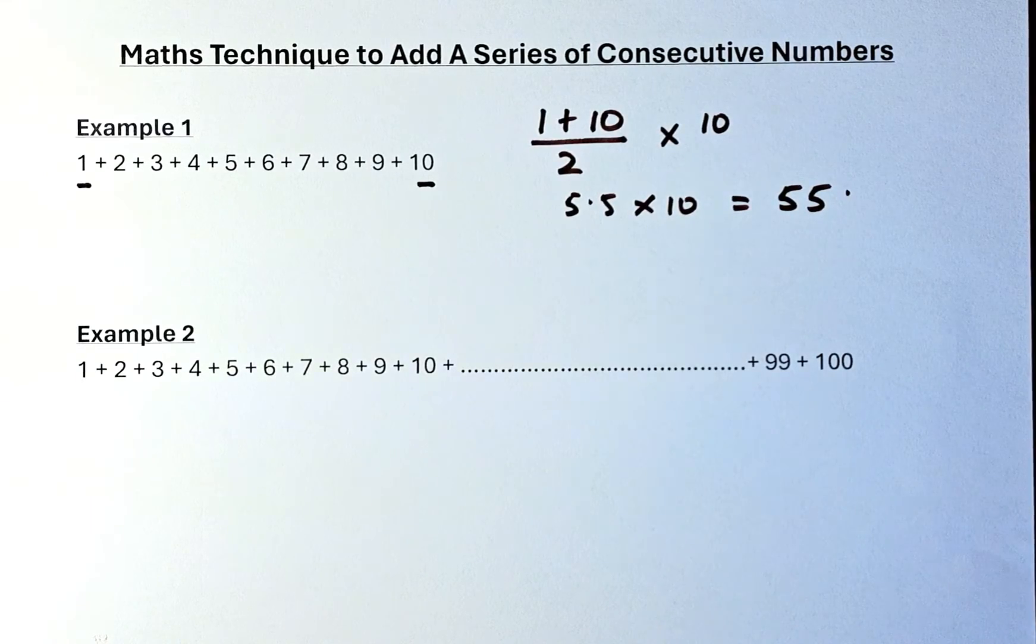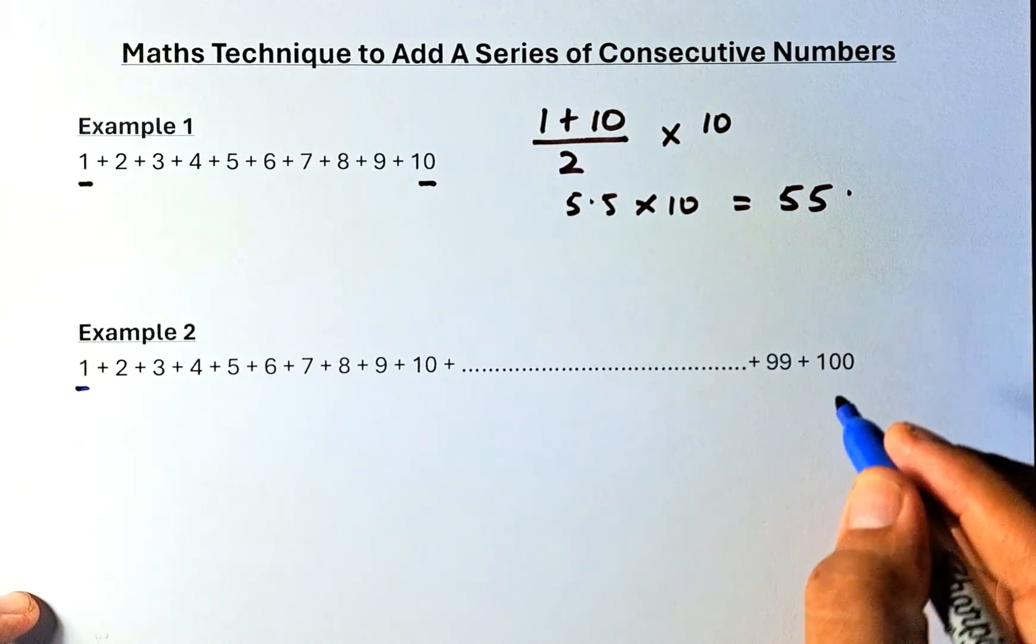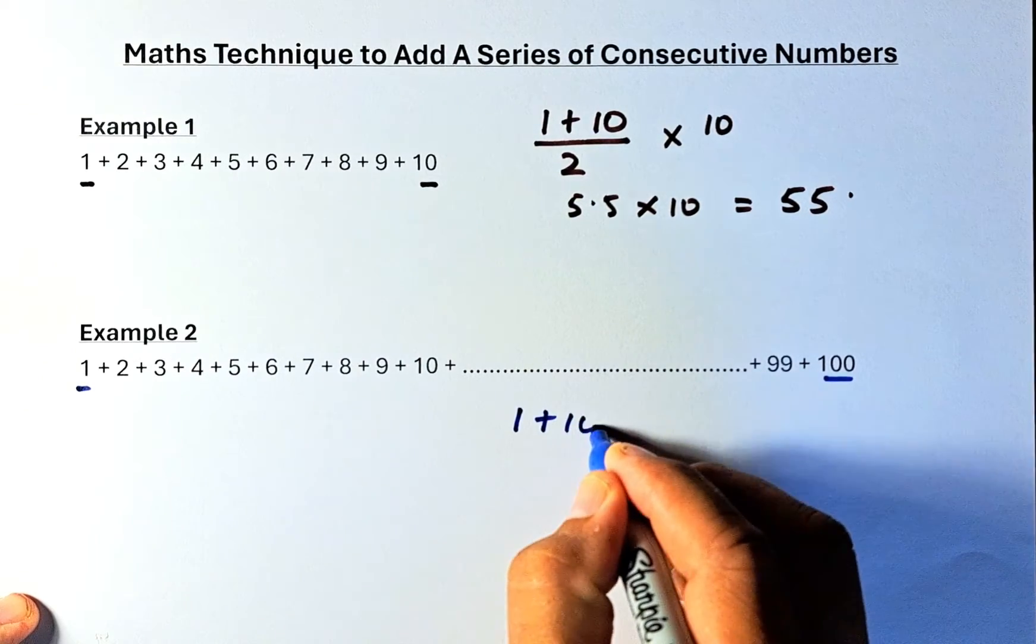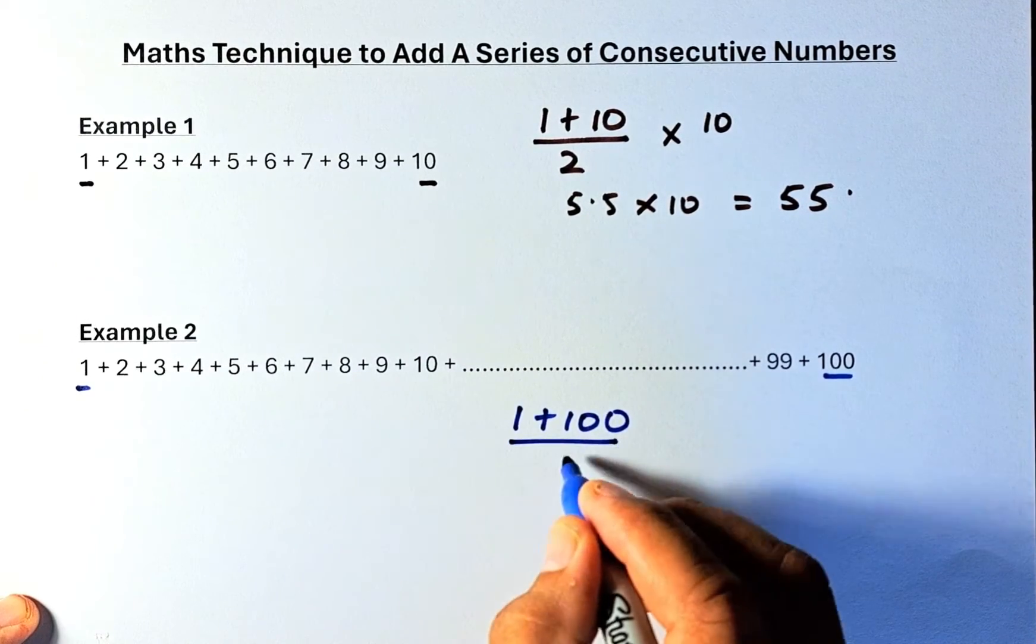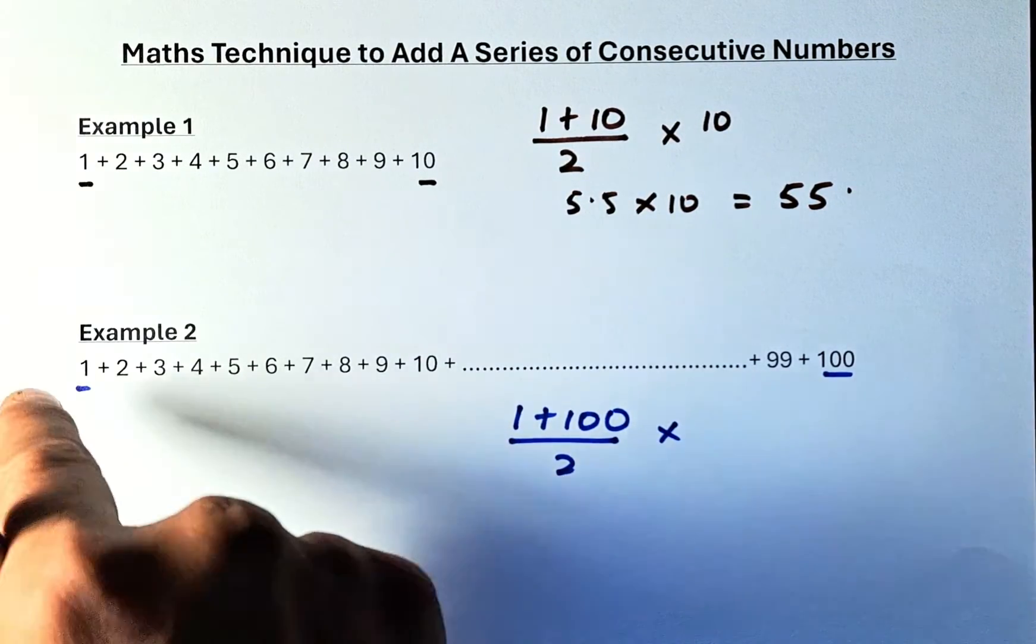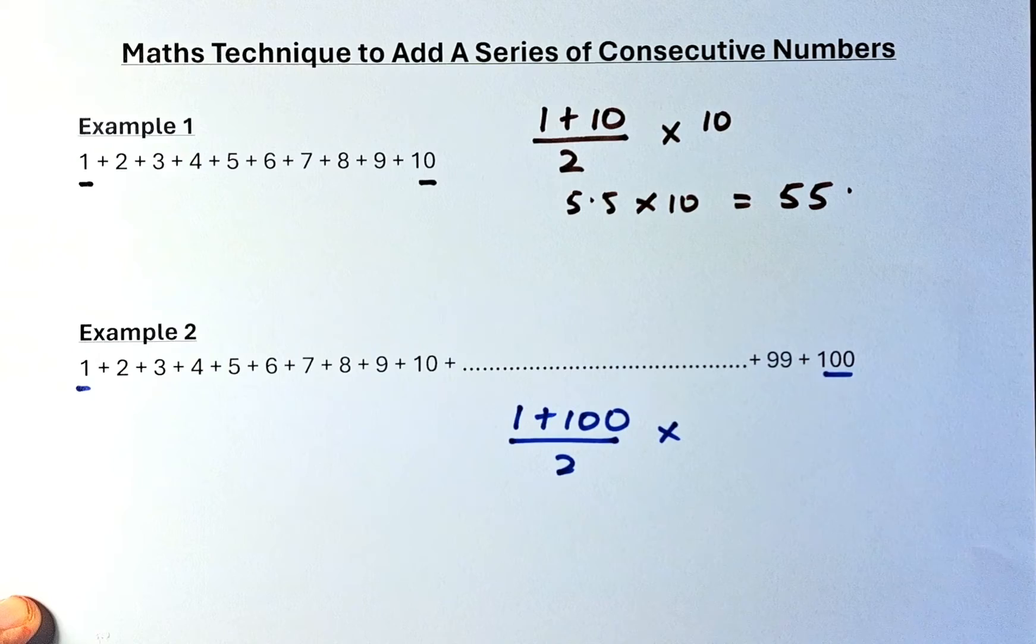So again, you take the first number which is 1 and the last number is 100, you get the average. So 1 plus 100 and then you divide by 2, you get the average and then you multiply by total number. You know 1 to 100, they are all together 100 numbers,